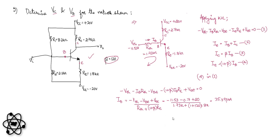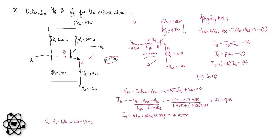IC equals β times IB, which is 120 multiplied by 35.39 microamps, giving IC equal to 4.25 milliamps. Then VC equals VCC minus IC·RC, which is 20 minus 4.25 milli times 2.7 kilo, giving VC equal to 8.53 volts.